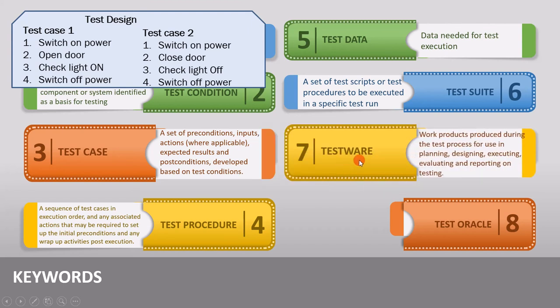The next keyword is testware, defined as work products produced during the test process for use in planning, designing, executing, evaluating, and reporting on testing. As we know, we have different activities in the test process, like test planning, test monitoring, test analysis, test design, test implementation, test execution, and test closure. Each of these activities provides an output, and these outputs are called testware. Testware is stored for each testing phase for future reference.